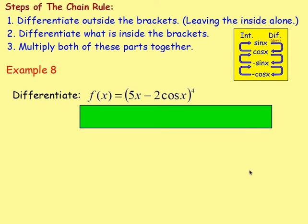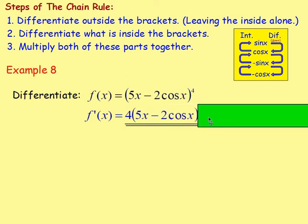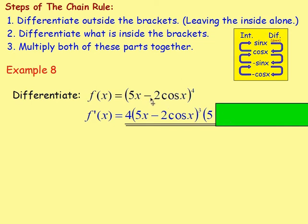Example 8: differentiate f(x) equals (5x minus 2 cos x) to the power of 4. We don't have any root signs, we don't have x in the bottom of a fraction, so we jump straight into the chain rule. f'(x): bring the power down — 4 at the front, decrease the power by 1, leave the brackets as they are — so 4(5x − 2 cos x)³. Then differentiate inside the brackets: differentiate 5x gives 5; differentiate negative 2 cos x — negative cos x goes to positive sine x — so plus 2 sin x. That is your answer.